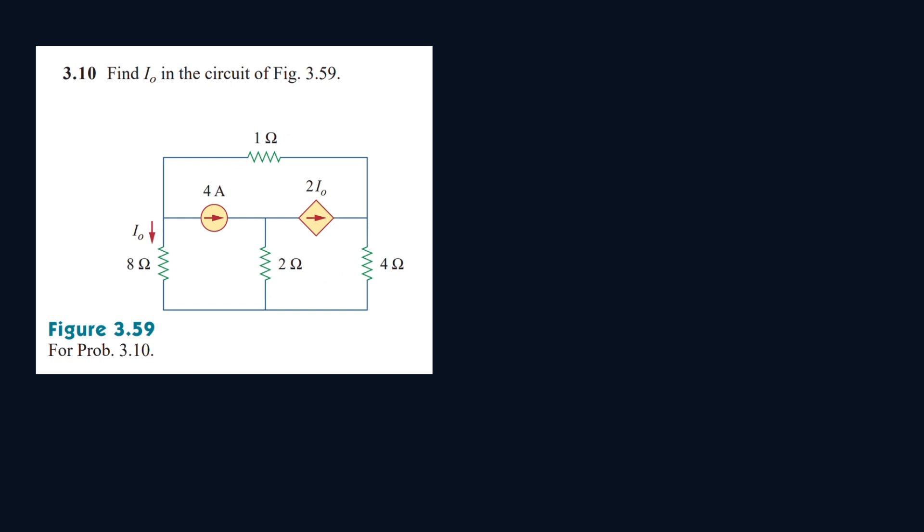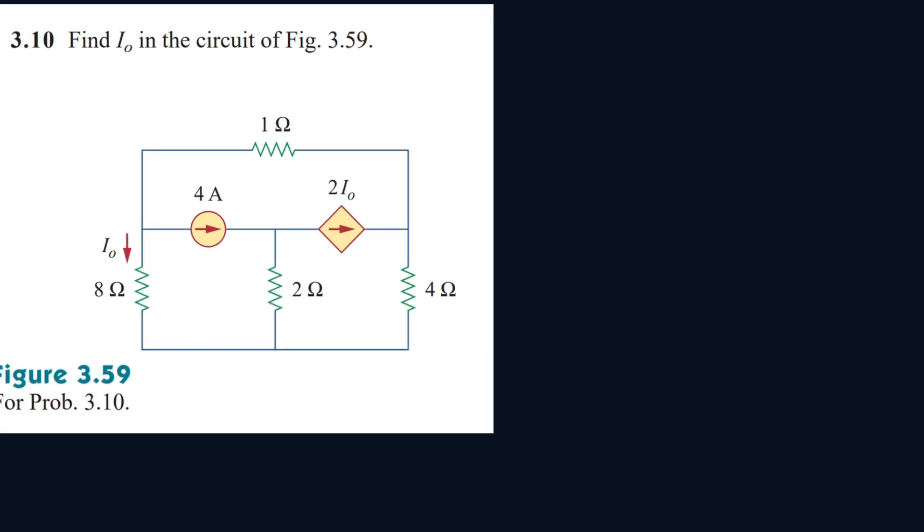All right, so let's try and find IO for the following circuit. Okay, so let's write down our nodes. This will be VA, this will be VB, VC. Direction of current: I1, I2, I3.